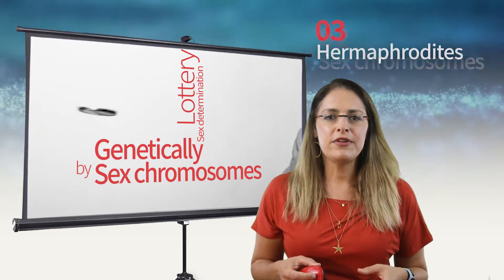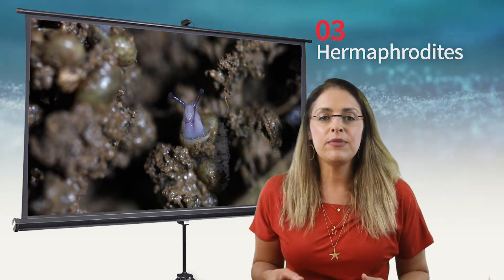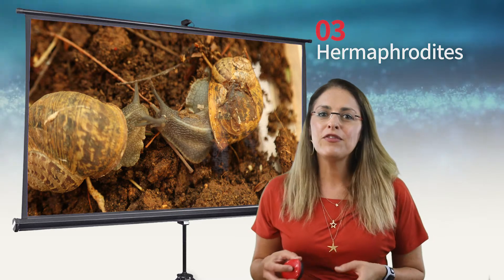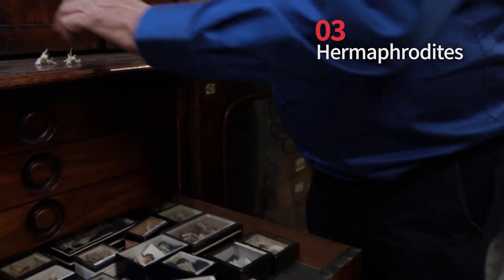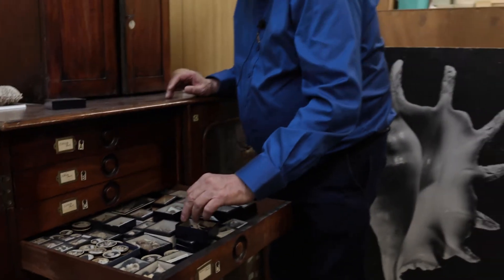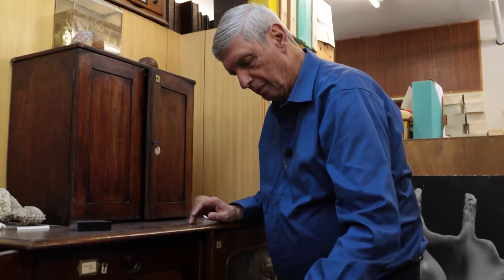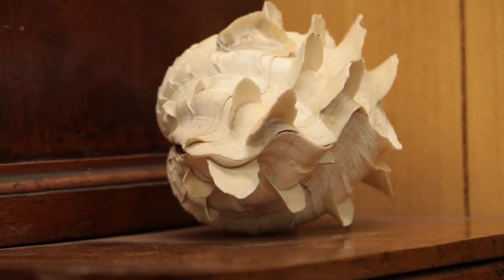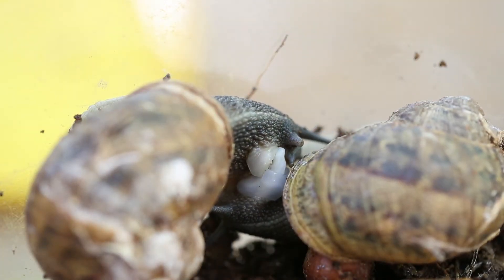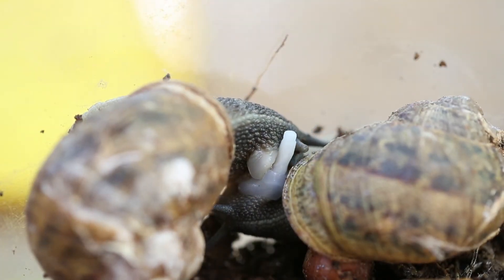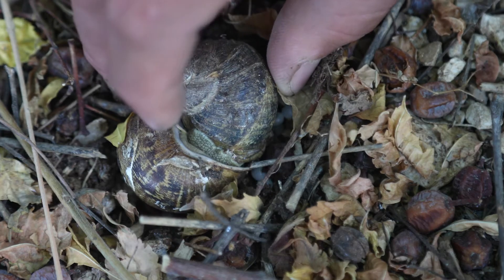When a snail emerges from its egg, we don't have to ask boy or girl, as the answer will always be both. Snails and quite a few other animals are hermaphrodites — both male and female. We will visit Professor Joseph Heller and his large mollusk collection at the Hebrew University to learn about hermaphrodites. In spite of the fact that hermaphrodites produce both eggs and sperm, they only rarely self-fertilize. I will invite you to my garden to show you the dual reciprocal mating of garden snails and how they lay eggs.